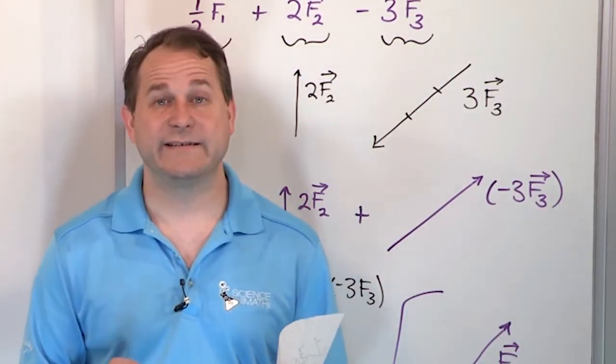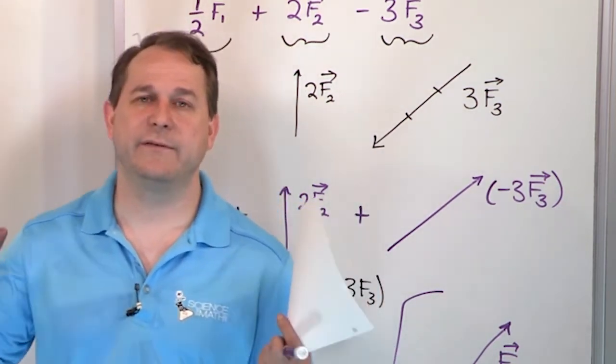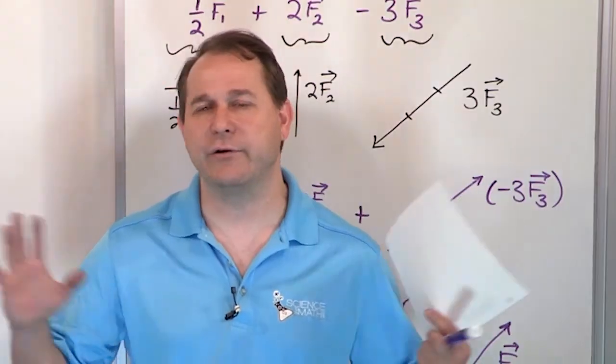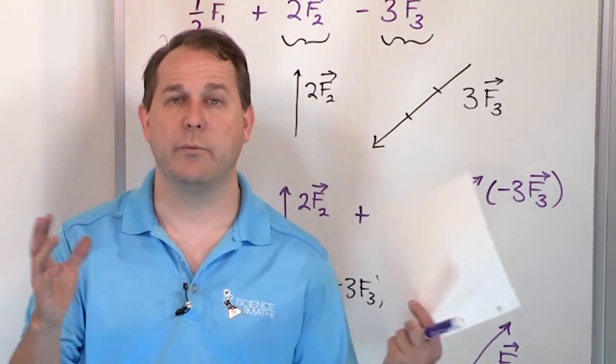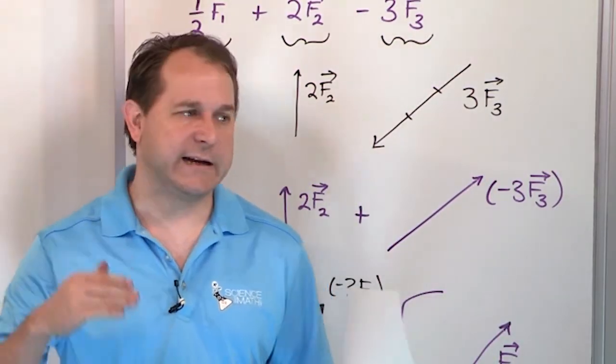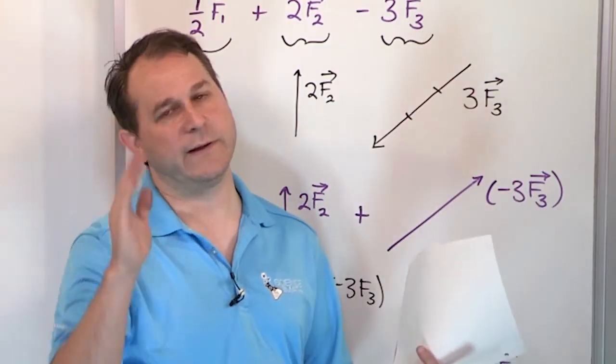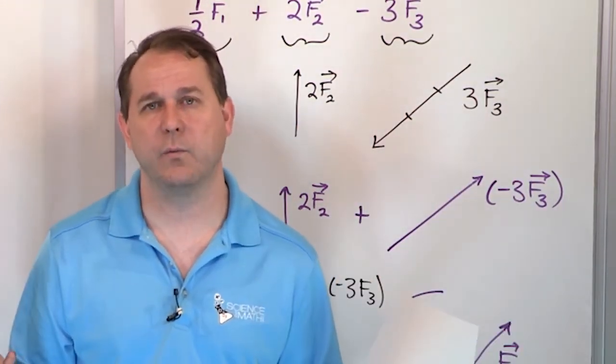So what we're going to do in the next several sections is teach you how to add vectors without using these drawings. And the way you do that is you first have to understand how to break a vector into what we call components. We break it into pieces is what it means. We break it into a piece going this way and a piece going this way because it's easier to add the pieces together than it is to deal with the whole vector at once.